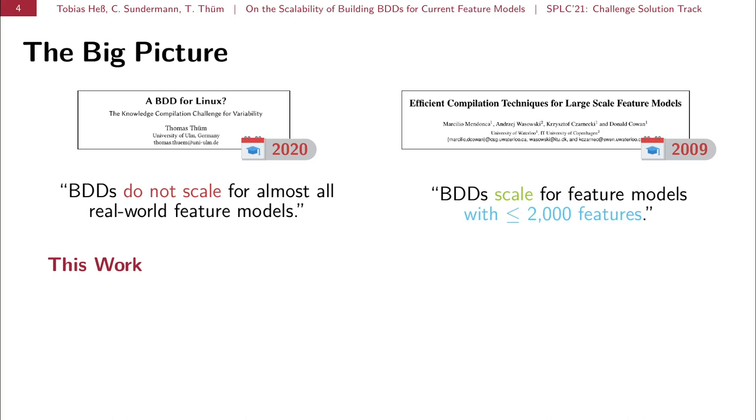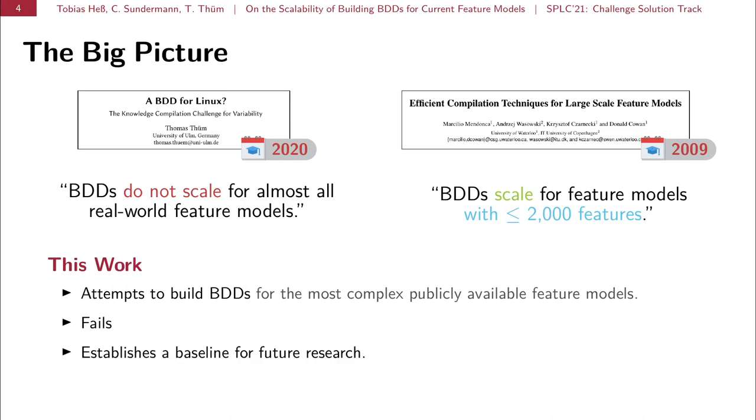which states that BDDs scale for feature models with less or equal 2,000 features. And so the contents of this work are, we attempted to build BDDs for the most complex publicly available real-world feature models. And we emphasize real-world feature models here. This work also contains a negative result because we failed for almost all feature models. And it is the goal of this work to establish a baseline for future research, so that we can compare advances in BDD construction to this baseline in the future.